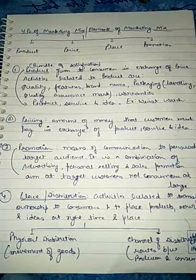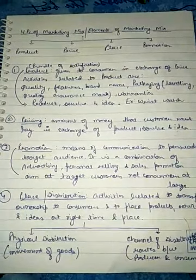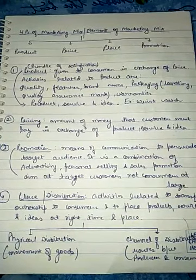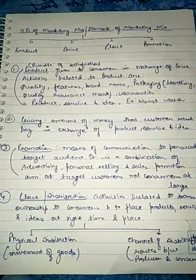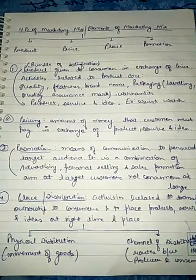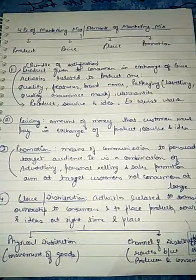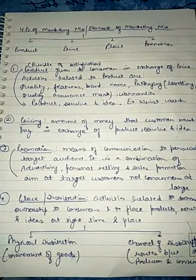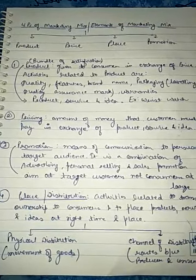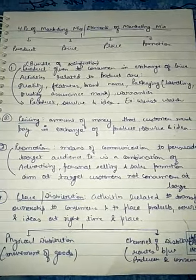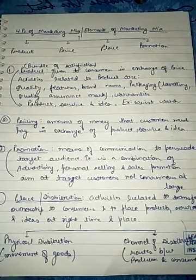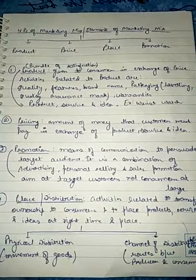Then the next is place and distribution — how you are placing and distributing your product. The main aim of distribution is to place the product, service, and ideas at the right time and at the right place. For example, if you are distributing ACs or coolers in the winter season, the customer will not buy. So you have to place the cooler and AC at the right time, which is the summer season.